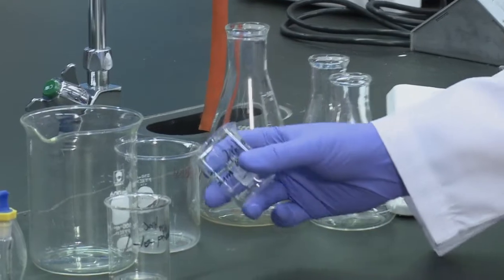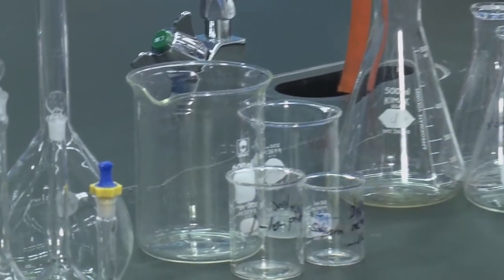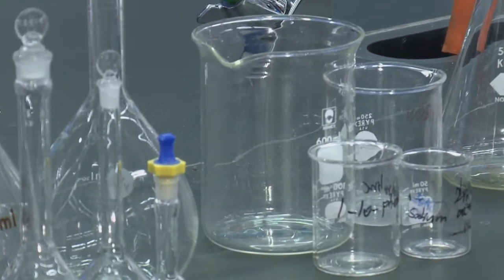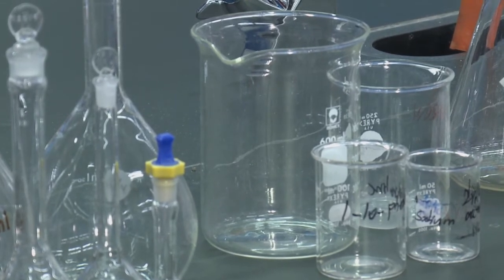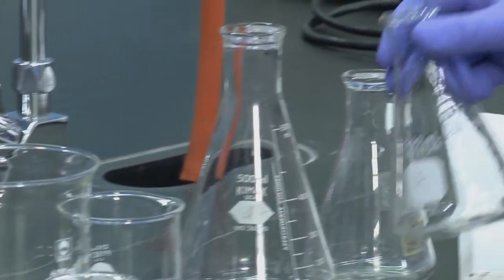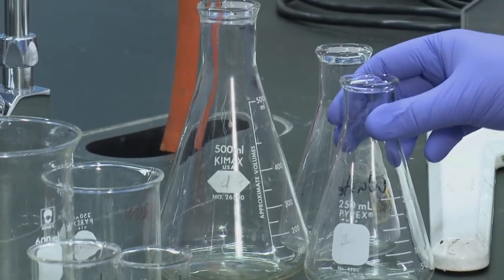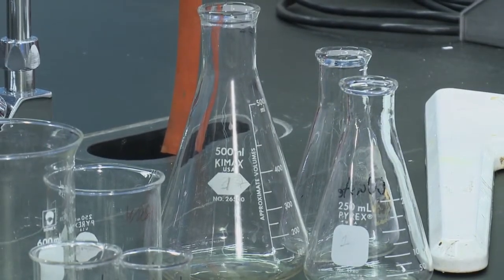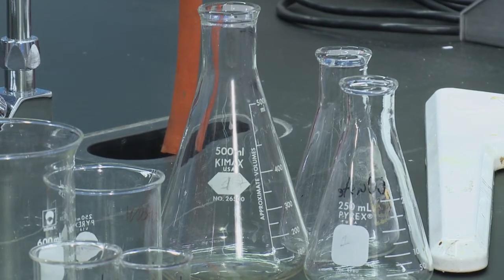The next glassware you'll use commonly are beakers. They are just for holding volumes of liquid but not for specific accurate measurements. Likewise with your Erlenmeyer flasks which are often used for titrations. They are not to be used for accurate volume measurements.